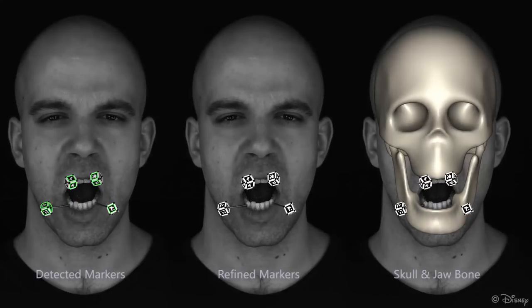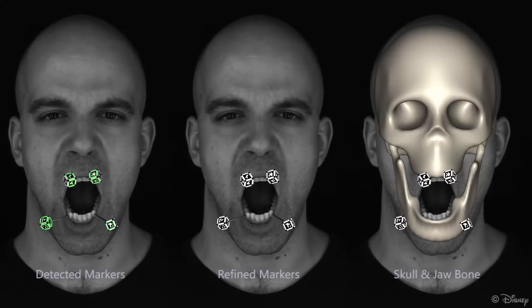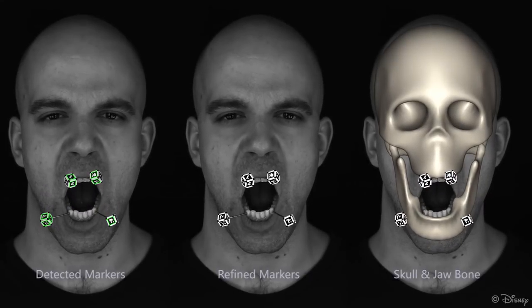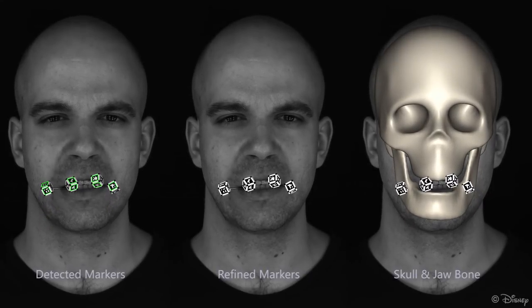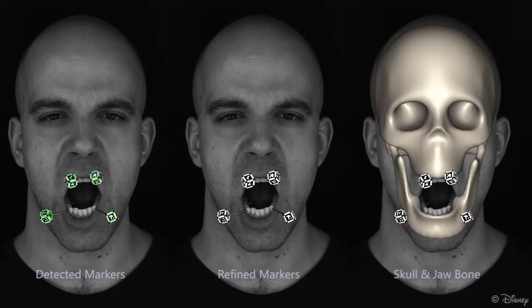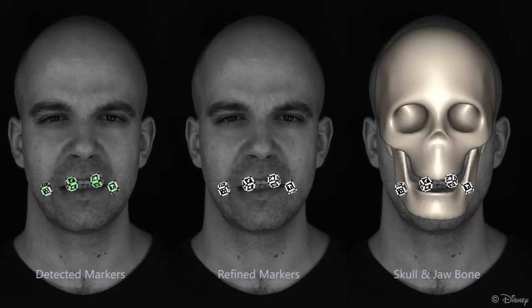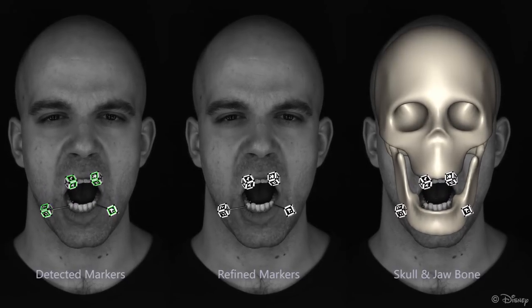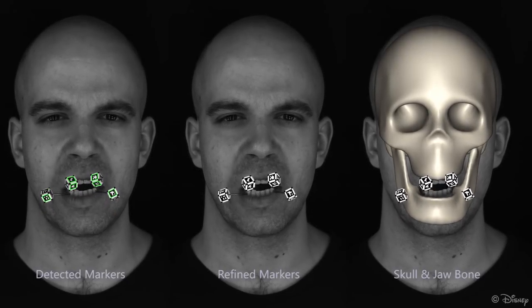To obtain the accurate jaw motion, we detect the markers in each individual frame, estimate the position of each cube by minimizing the reprojection error, and refine their positions using a photometric loss.